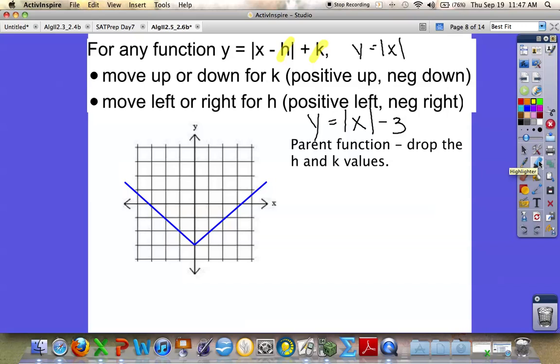So what we've learned is that you move up or down for K values, positives go up, negatives go down, and you move left or right for H values, positives will actually go left and negatives will go right.